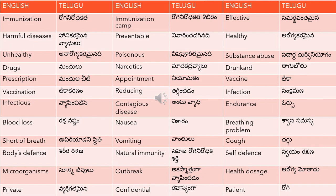Outbreak is 'akasmat ga vyaapinchadom', meaning a sudden spread. In Hindi we would say 'failna' or to spread. So outbreak refers to a sudden spread of diseases — 'akasmat ga vyaapinchadom'. Health dosage is 'arogya motadu'.